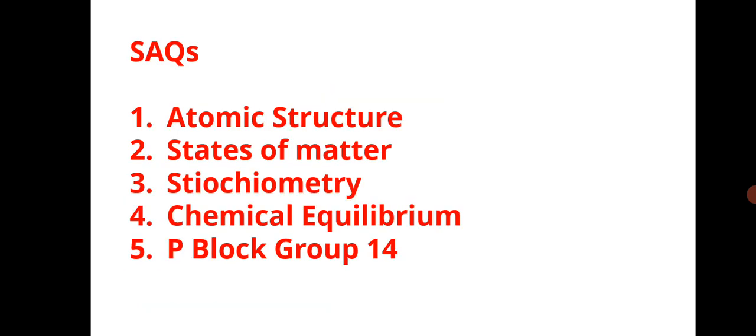Let us see the preparation tips for SAQs. One SAQ will come from atomic structure, two SAQs will come from states of matter, two SAQs from stoichiometry, two SAQs from chemical equilibrium and one SAQ from P block group 14 elements. If you are preparing these five chapters thoroughly, the questions are given in the description. Check the important questions and the blueprint. Definitely you will get 24 marks from the SAQ section.